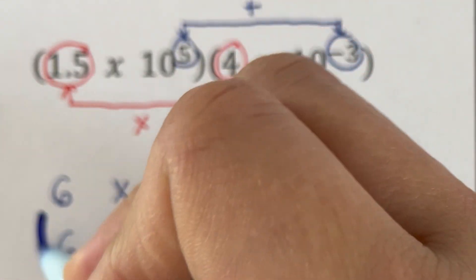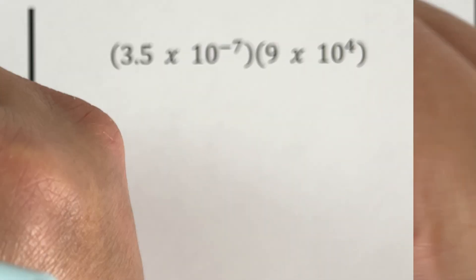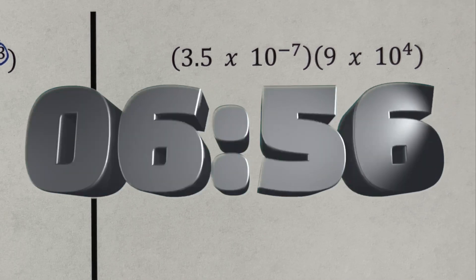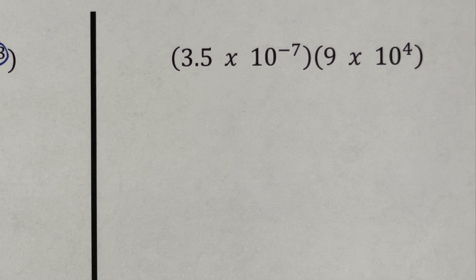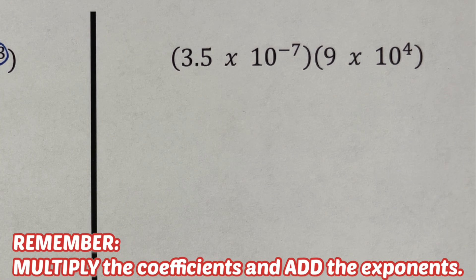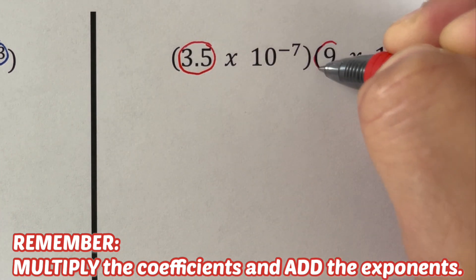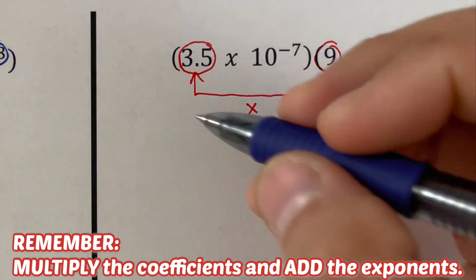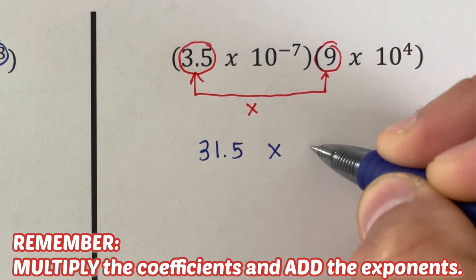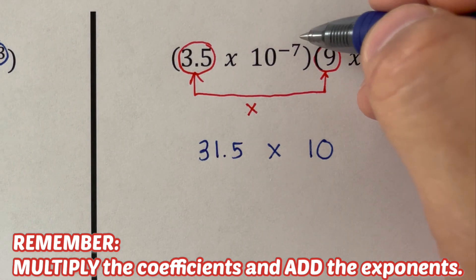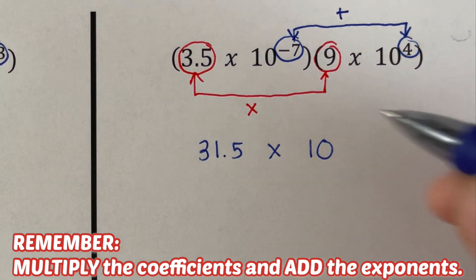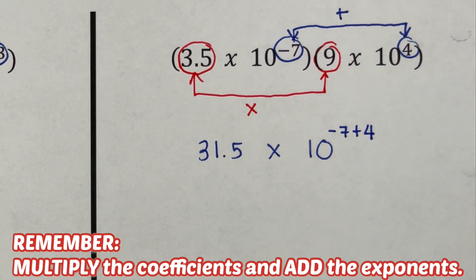At this time I'd encourage you to pause this video and try the next problem on your own. The basic rule is to multiply the coefficients and add the exponents. Here we multiply 3.5 and 9 — 3.5 times 9 is 31.5 — so that is 31.5 times 10 to the power. The exponents negative 7 and 4 shall be added: negative 7 plus 4.